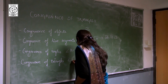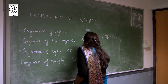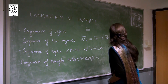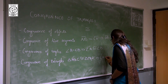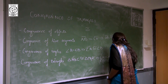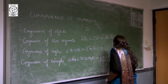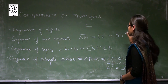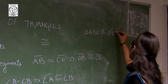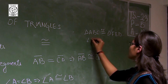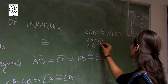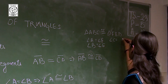So if triangle ABC is congruent to triangle PQR, it means angle A equals angle P, angle B equals angle Q, and angle C equals angle R. Similarly, if triangle ABC is congruent to triangle FED, then angle A equals angle F, angle B equals angle E, and angle C equals angle D.